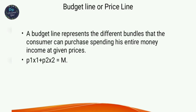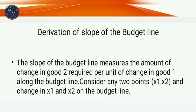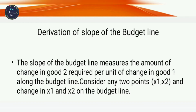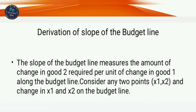The next topic is the derivation of the slope of the budget line. The slope measures the amount of change in good two required per unit of change in good one along the budget line. If you sacrifice one good, you gain the other. The ratio of how good two changes to how good one changes gives the slope of the budget line.